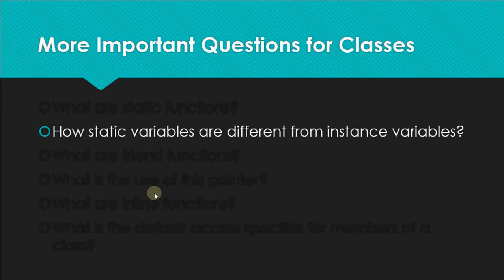rollNumber and name are instance variables because as you create an object of the class, memory is allocated for rollNumber and name for each student separately. But we have a special kind of variable where you write 'static' in front of it. For example, passing marks — you can have any number of students, but passing marks should be the same for all. So we use a static variable: memory for static variables is allocated only once.